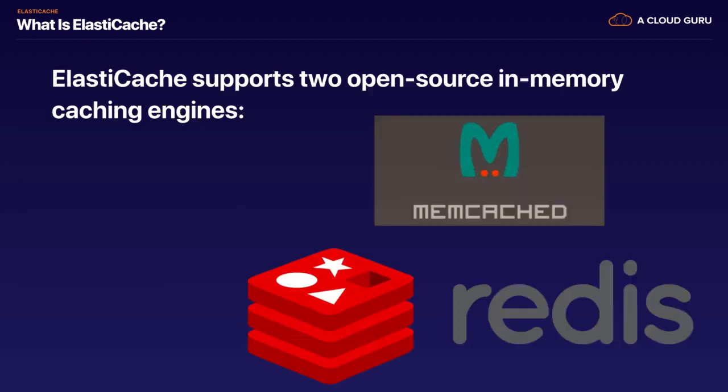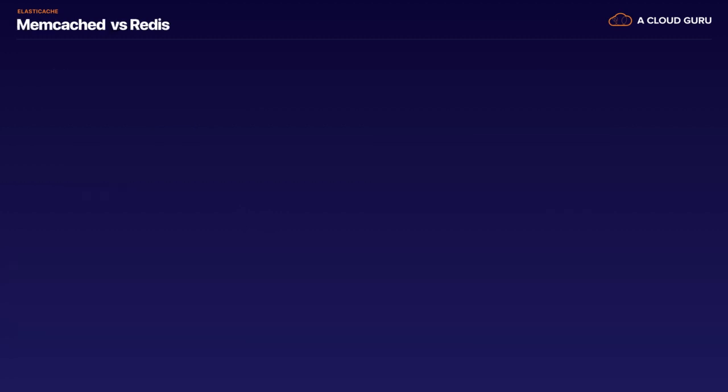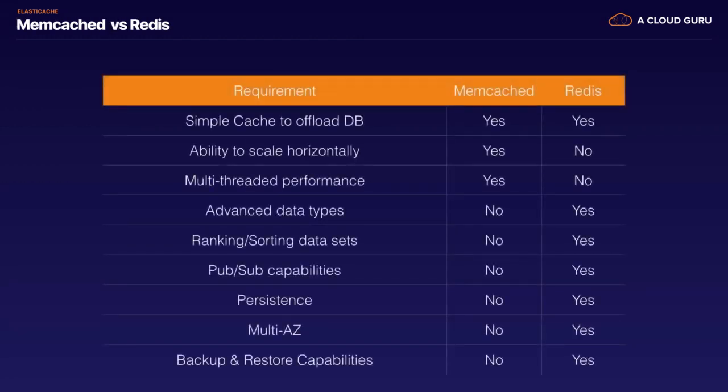ElastiCache supports two open source caching engines: Memcached and Redis. So what is the difference between Memcached and Redis, and when should you use one over the other?